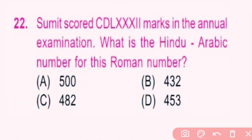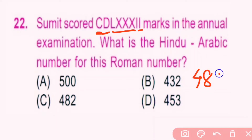Question number 22. Sumit scored CDLXXXII marks in the annual examination. What is the Hindu-Arabic number for this Roman number? C is 100, D is 500, so CD is 400. Then L is 50, XXX is 30, making 480, and II means 2, so the number is 482. C is the correct answer.